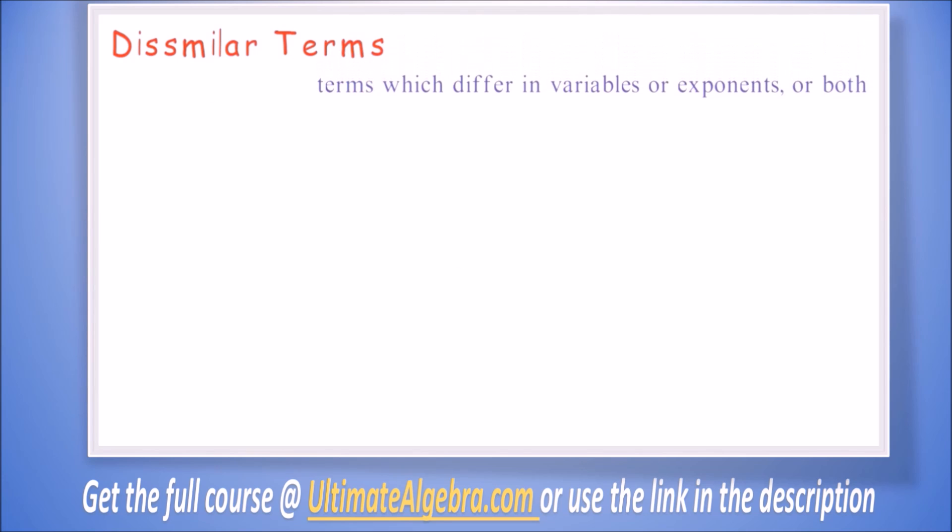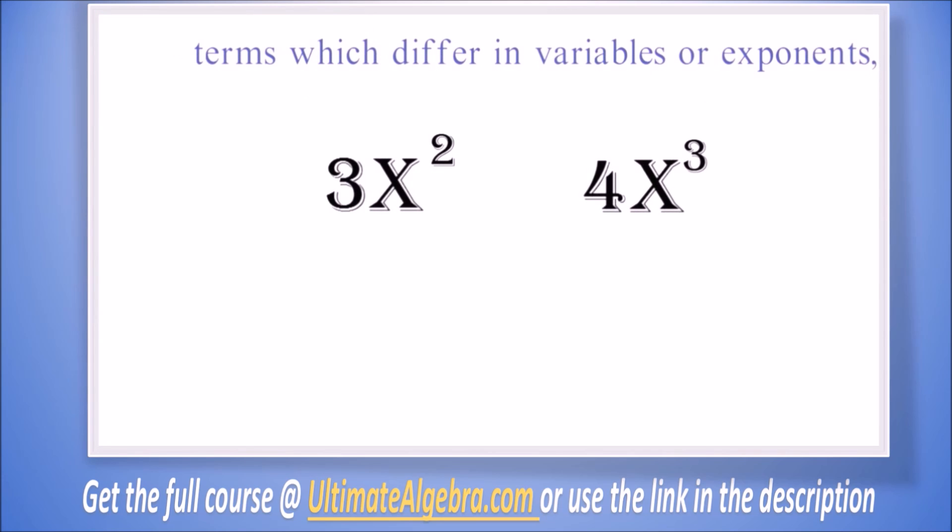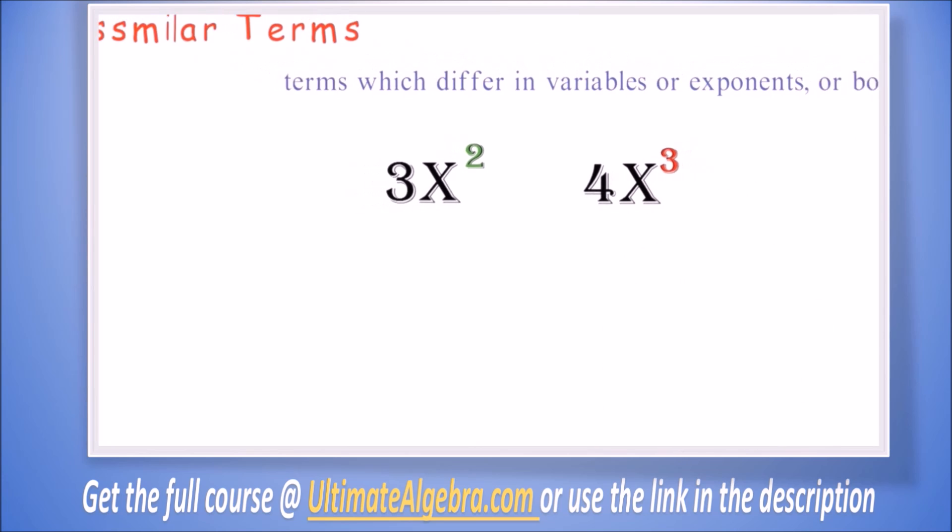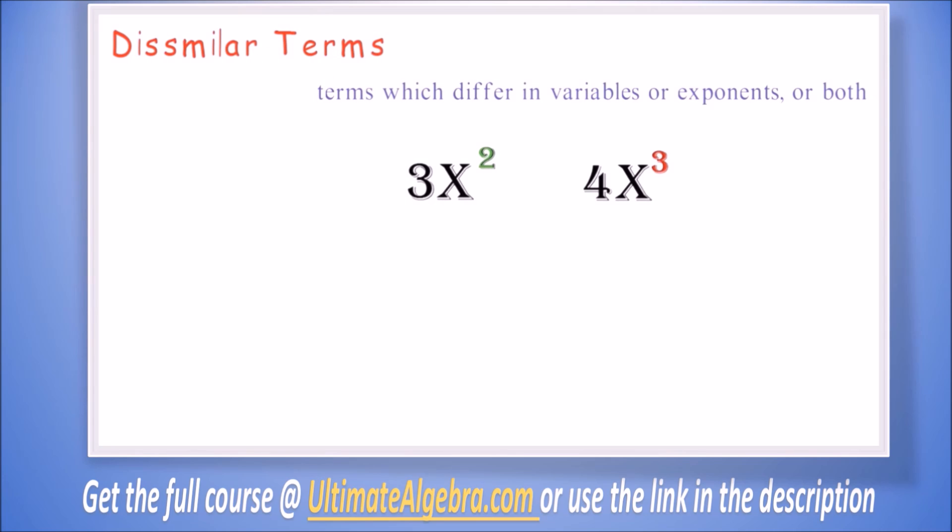Dissimilar terms are terms which differ in variables or exponents or both. Example: we have 3x squared and 4x cubed. Here both have the same variable x but different exponents. One is squared and the other is cubed. Though they have the same variable, because they have different exponents, we say they are dissimilar terms.